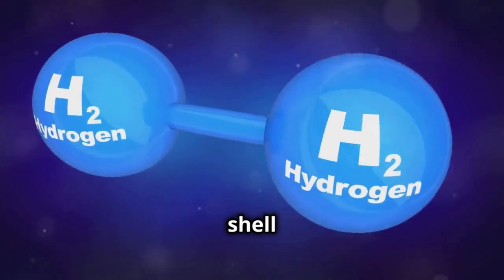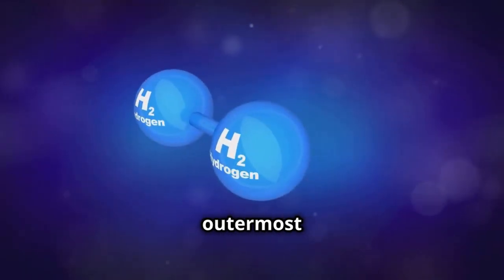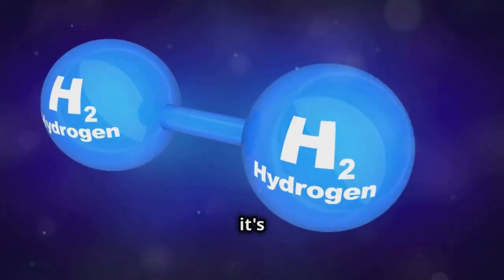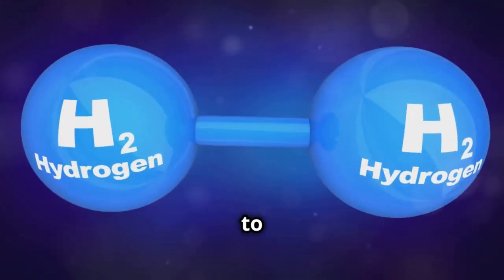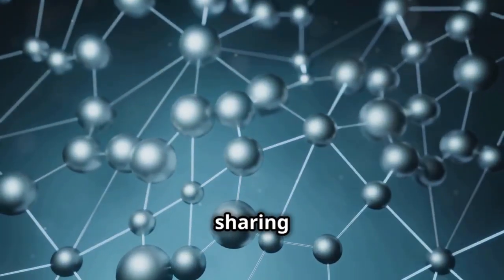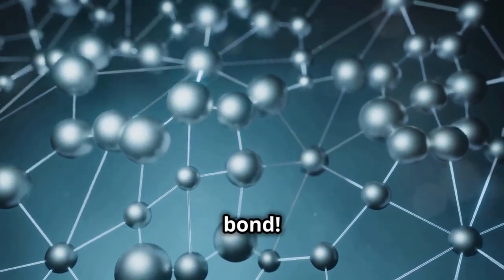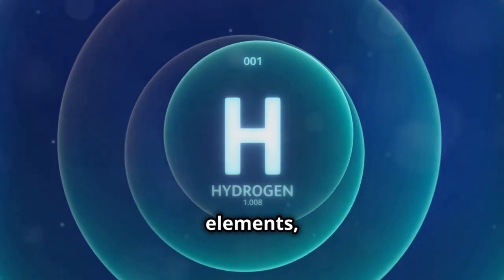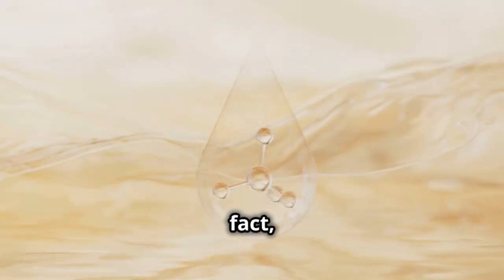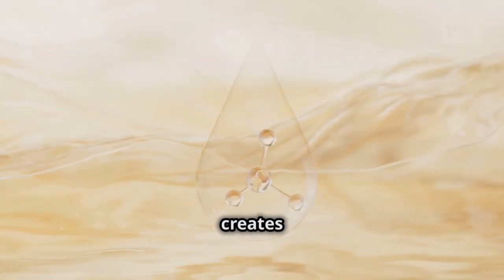Hydrogen's outermost shell wants two electrons, so it's always on the lookout for a partner to share an electron with. This sharing of electrons is what we call a chemical bond. Hydrogen readily forms bonds with other elements, especially oxygen. In fact, their bond is so strong that it creates one of the most important substances on Earth: water.